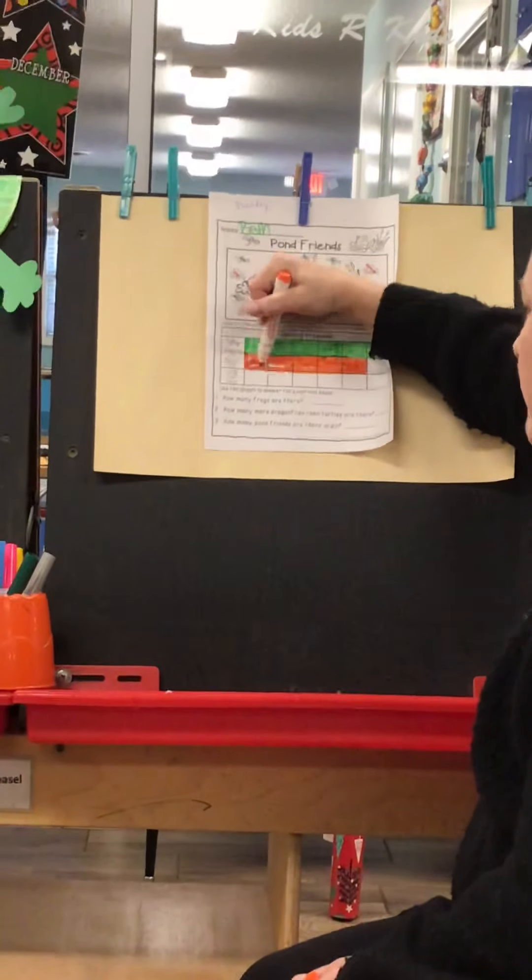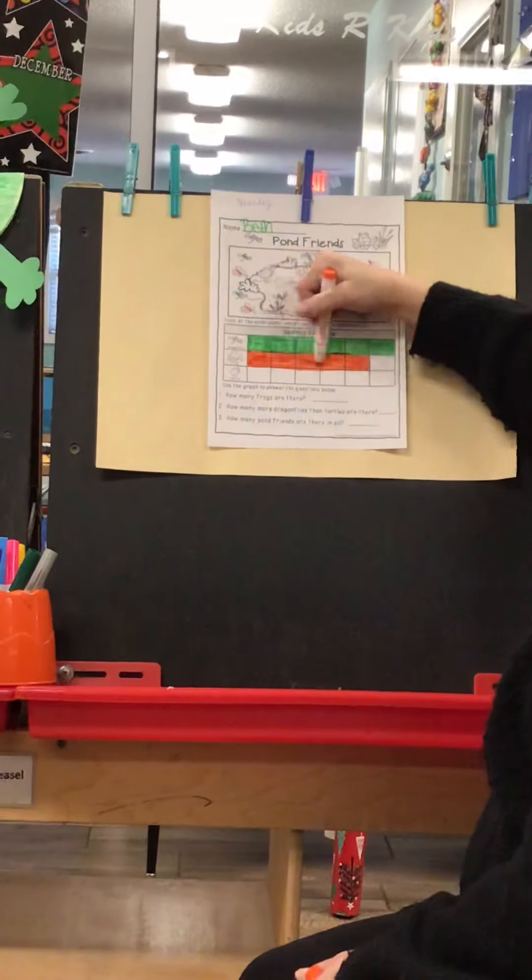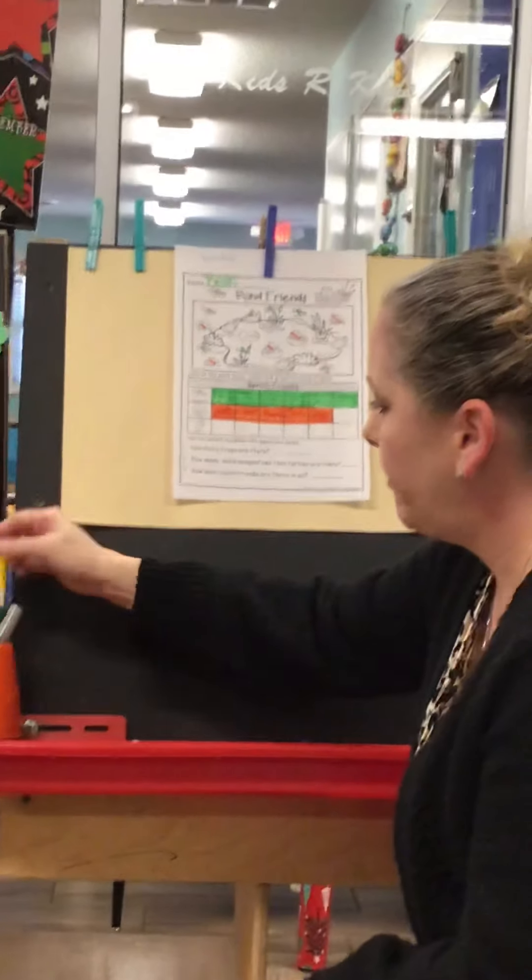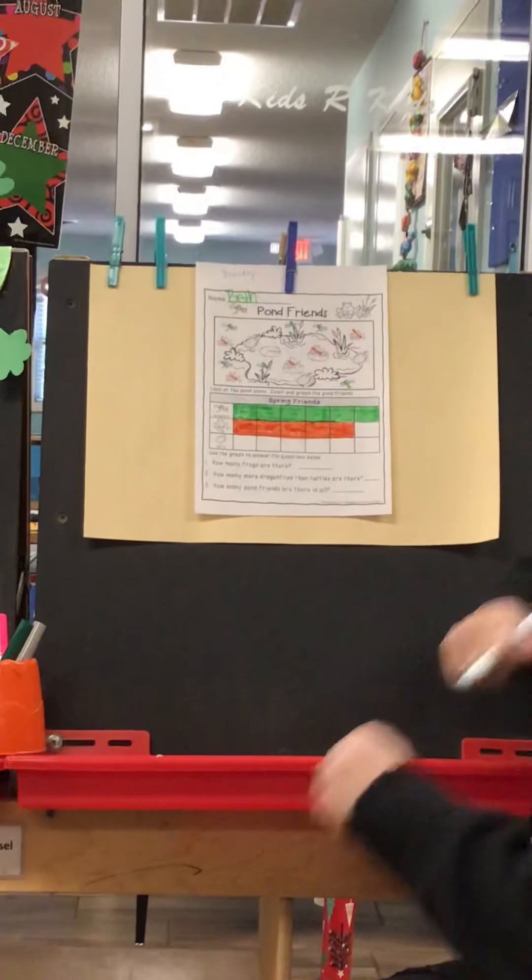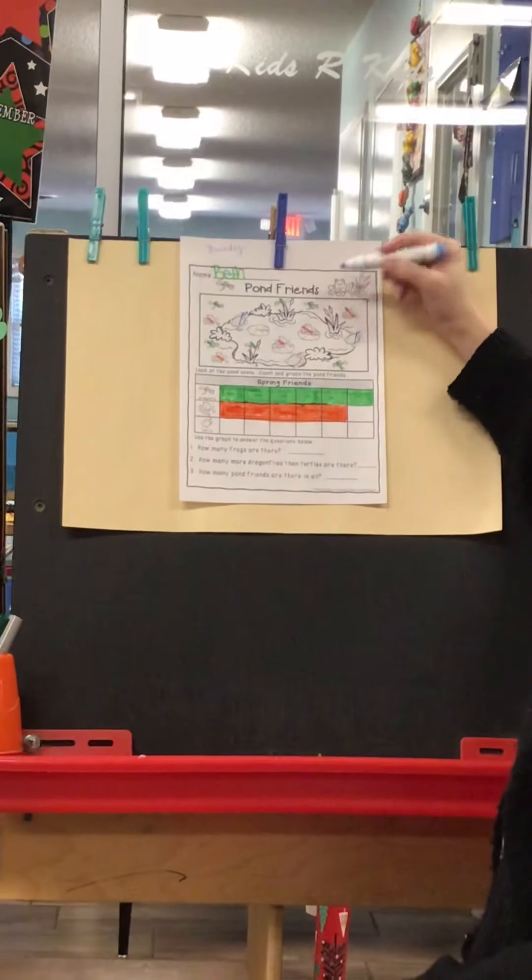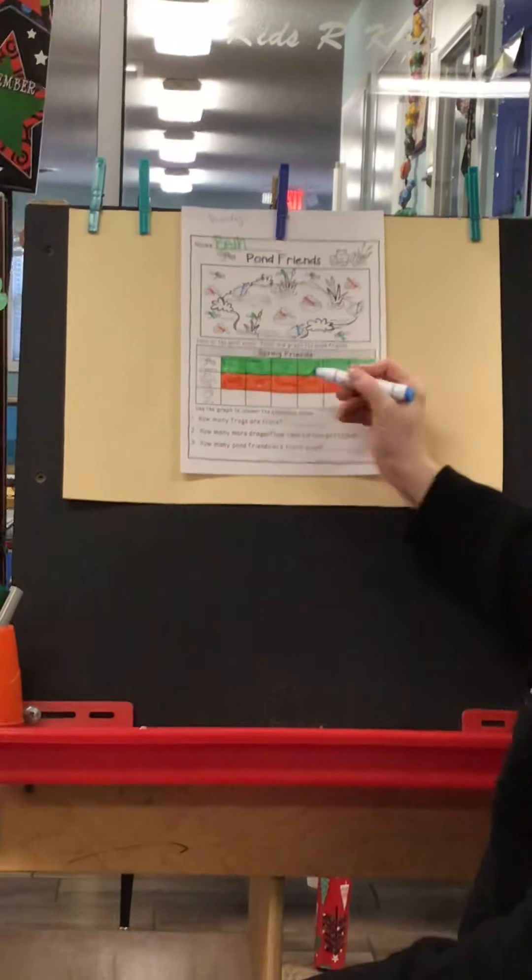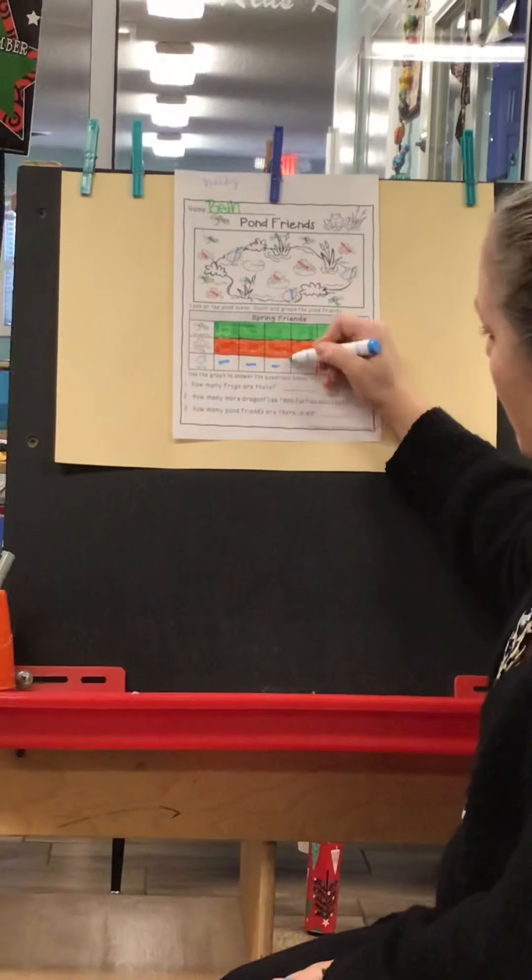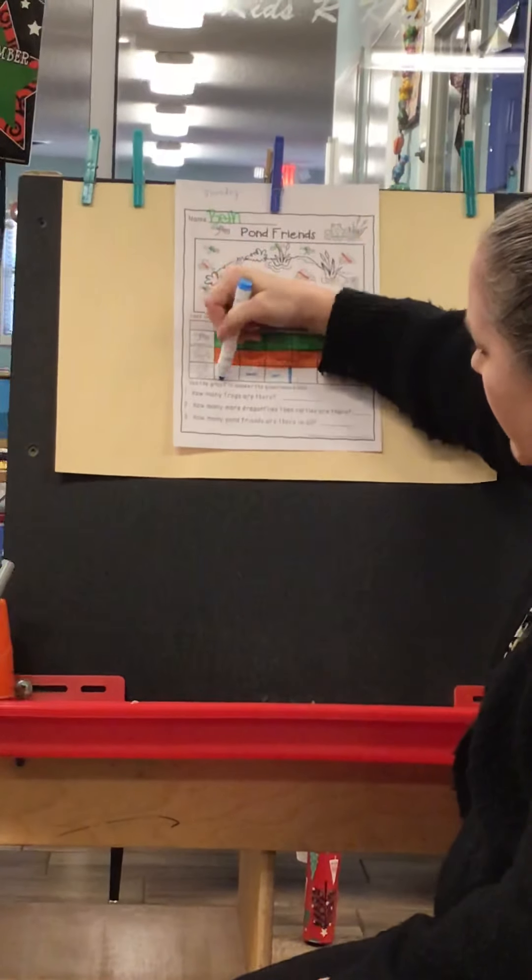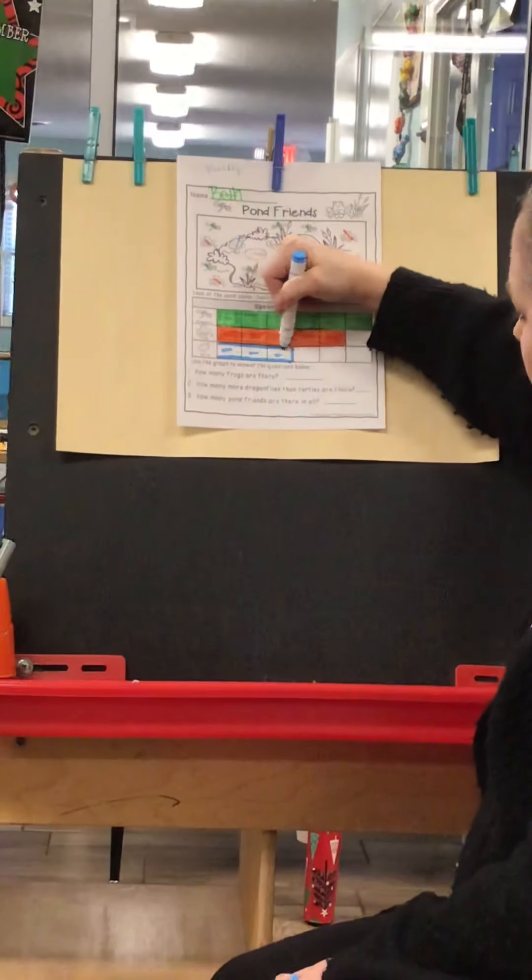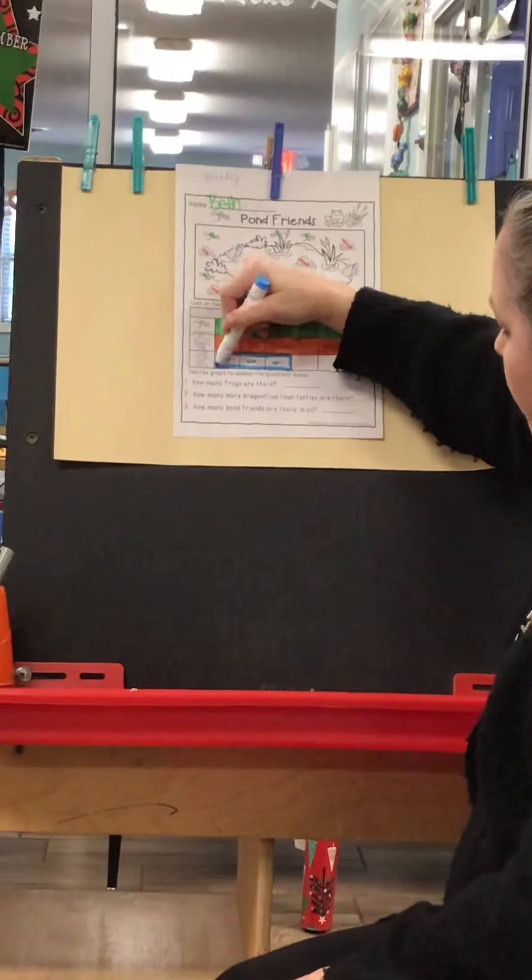All right, and the last animal on our little graph is the turtle. So let's count how many turtles. One, two, three. So you're going to count one, two, three boxes on the graph and color those in. All right.